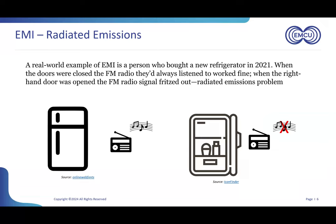A real-world example — it might seem trivial, but it's a great illustration. A colleague posted on LinkedIn that they'd bought a new refrigerator back in 2021. They'd had a refrigerator in their kitchen for years with an FM radio right next to it so they could listen to news or music while cooking. When the old fridge finally died and they bought a new one, they left the FM radio in the same place — but as soon as they opened the new fridge door, the FM radio would fritz out. That's a classic radiated emissions problem.